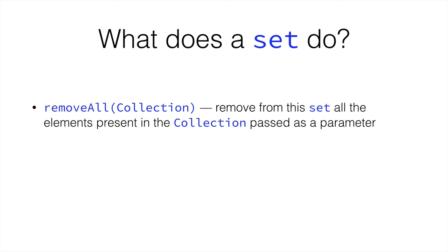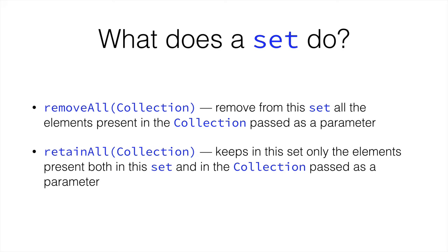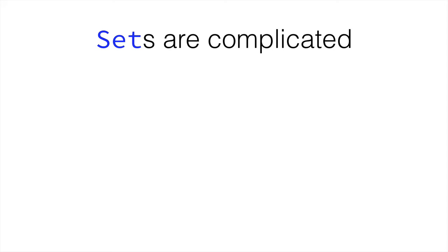So if you have a set with 15 students, and you remove all from a different set that has 10 of those students, then your initial set will end up with 5 students. RetainAll keeps in this set only the elements present in both this set and in the collection that you give as a parameter. So if you have 2 sets each one with 5 numbers, and both of them have 2 numbers that are the same, and you call retainAll in one of them and give the other set as a parameter, then the set you called retainAll on ends up with 2 numbers. So as you can see, sets are kind of complicated.